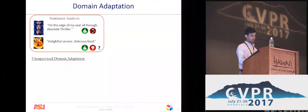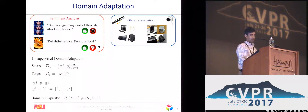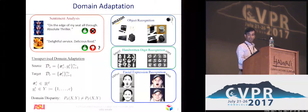Domain adaptation in computer vision is studied using different datasets. For example, object recognition of images without a background versus images with a background, adaptation between MNIST and USPS datasets, or more recently between MNIST and SVHN datasets, and facial expression recognition datasets.